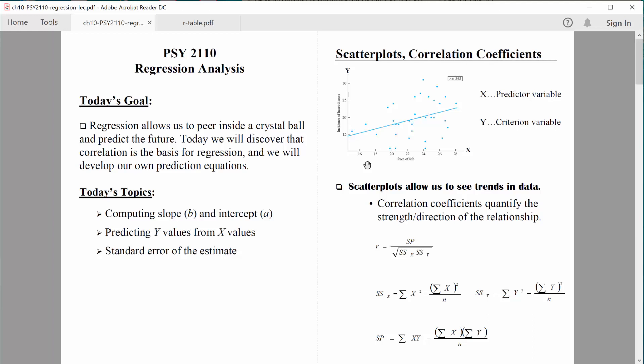the criterion variable is incidence of heart disease. And that's often measured as the number of people who have heart disease based on every thousand or maybe 10,000 people.